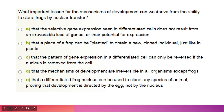The last question: what important lesson for the mechanism of development can we derive from the ability to clone frogs by nuclear transfer? The correct option is: that the selective gene expression seen in differentiated cells does not result from an irreversible loss of genes or their potential for expression. After dividing, cells maintain their nucleic acid stability. That concludes today's session.